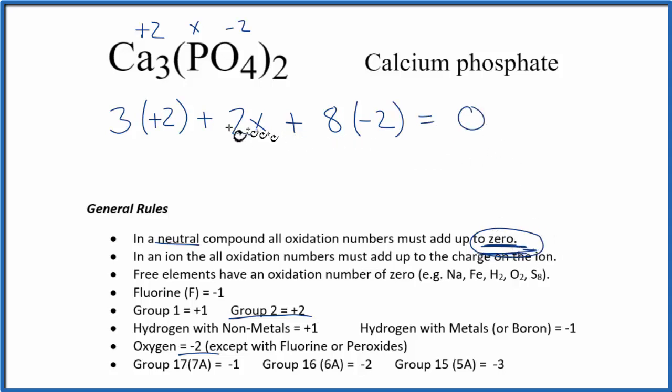So now it's just doing the math. Six plus 2X minus 16 equals zero. So if we get these over here, we'd have 2X equals 10. Divide both sides by 2. X equals 5.